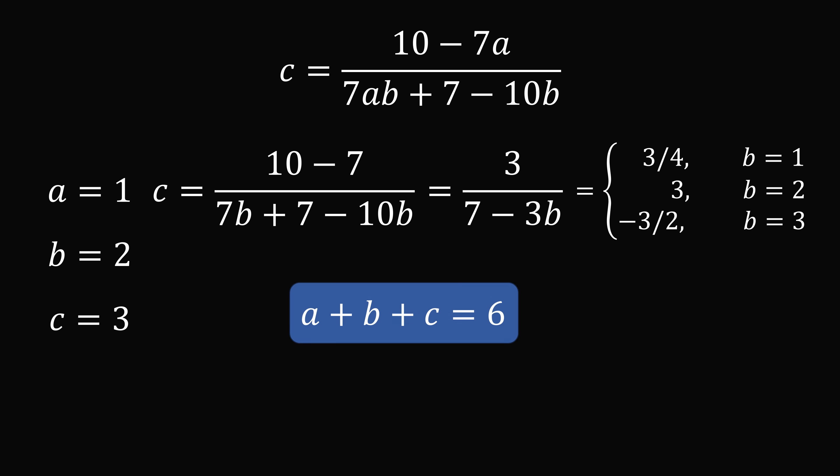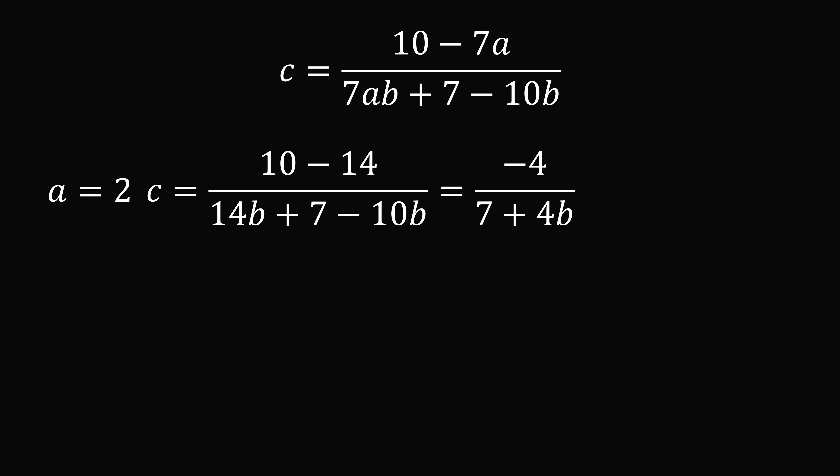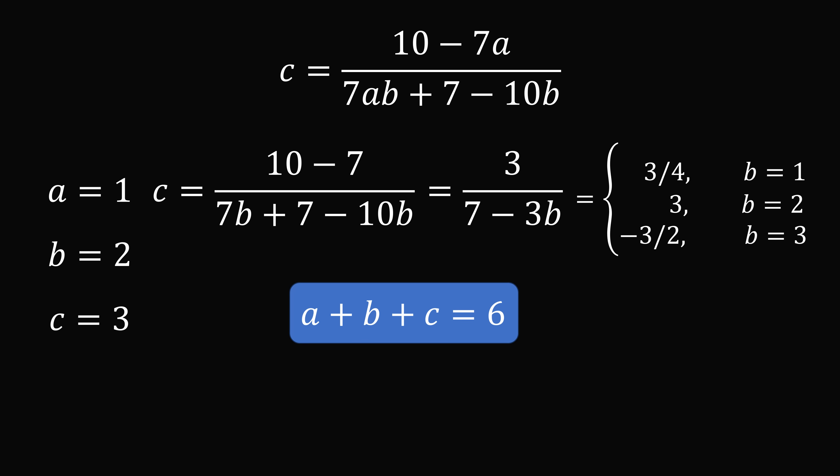So a plus b plus c is equal to 6. Now we just want to check there are no other possibilities. If a equals 2, the numerator becomes negative 4 and the denominator is 7 plus 4b. The numerator is negative and b is a positive integer, so no matter what value of b we pick, this is always going to be less than 0, meaning c can never be a positive integer. This is also true if a is greater than or equal to 2. So the only possibility is a equals 1, b equals 2, and c equals 3, giving a plus b plus c equals 6. That's the long way to solve this problem.